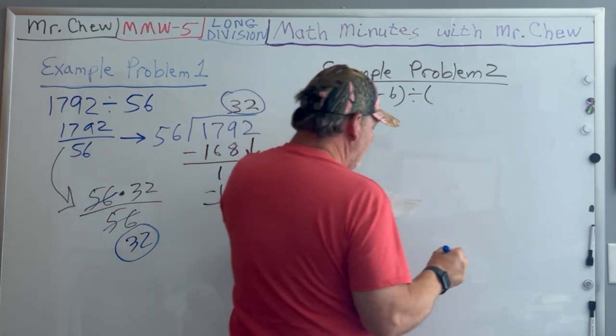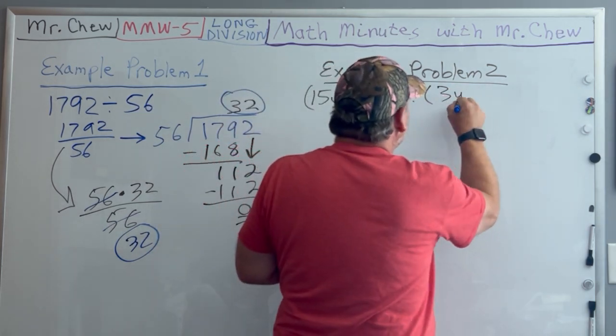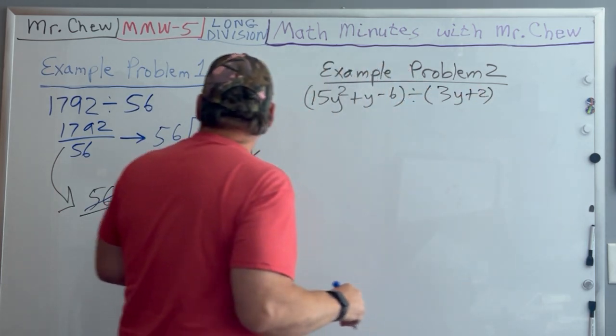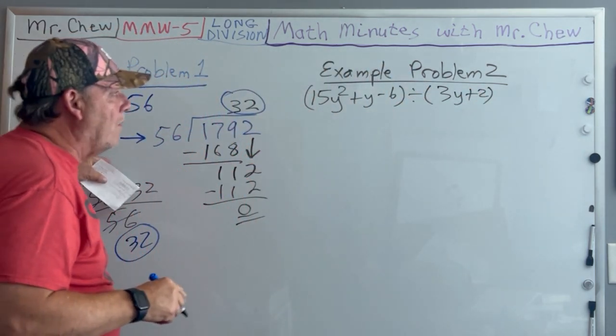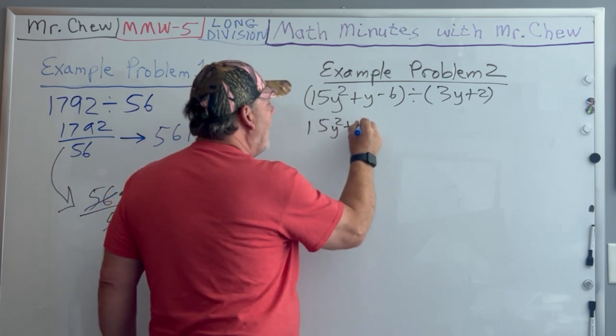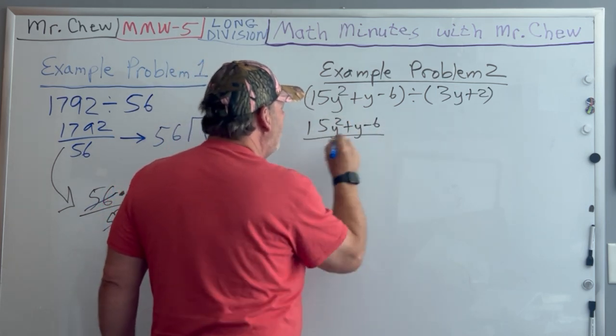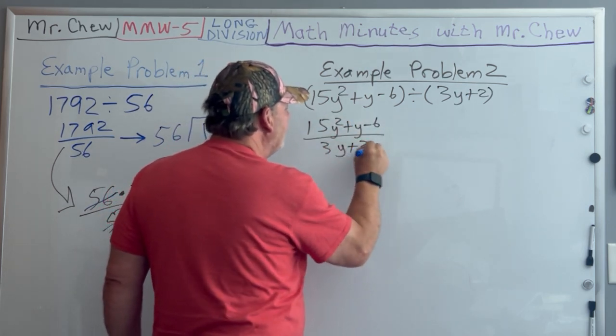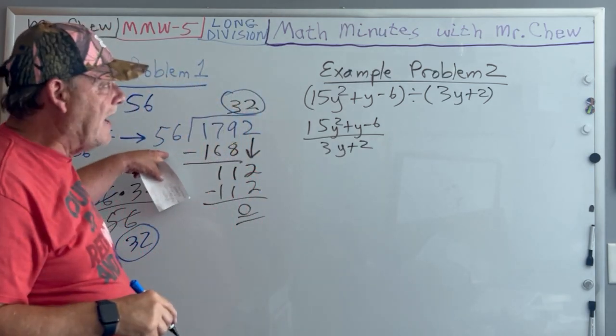I can write it like a fraction: 15y² + y - 6 over 3y + 2, but I can also long divide it like this.